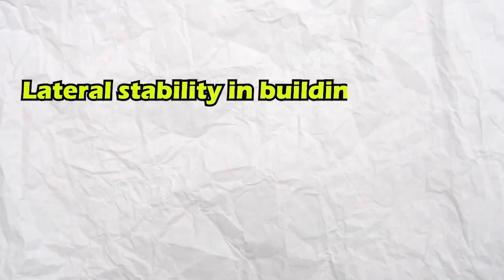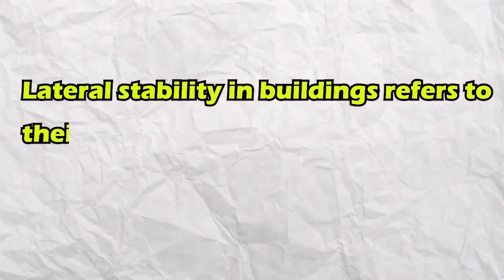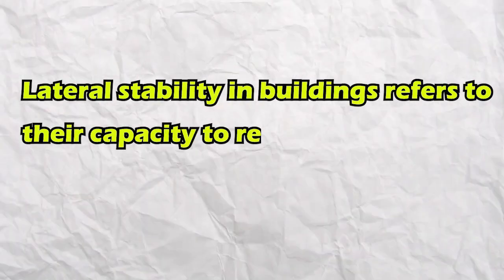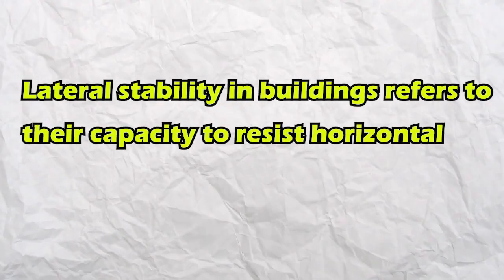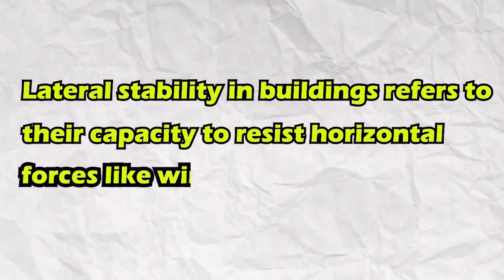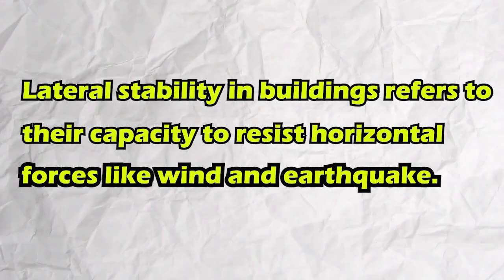We will also look at cantilever block columns and understand how engineers employ these systems to ensure our buildings do not collapse. In simple terms, lateral stability in buildings refers to their capacity to resist horizontal forces like wind and earthquake. Any horizontal force applied to a structure must make its way through the bracing system to the building's foundation.